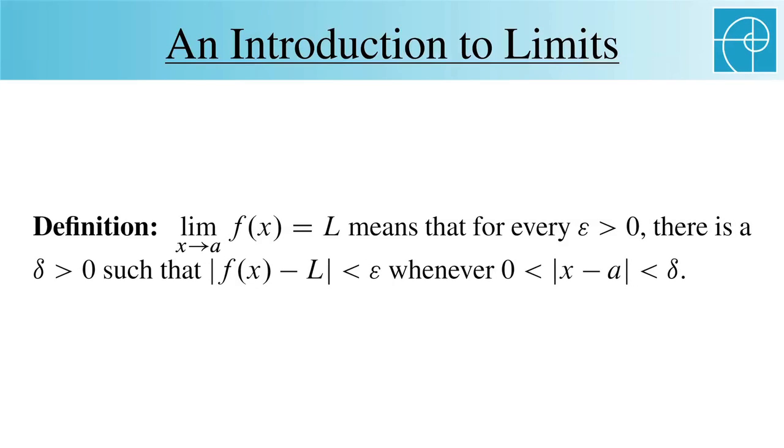Saying that the limit as x approaches a of f(x) equals L means that for every epsilon greater than zero, there's a delta greater than zero, such that the absolute value of f(x) minus L is less than epsilon, whenever the absolute value of x minus a is strictly between zero and delta. Note that we require that x minus a not be zero, since we don't want x to be equal to a. We don't care what f(a) is when considering the limit.